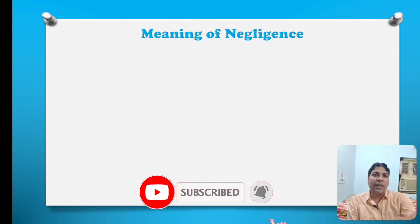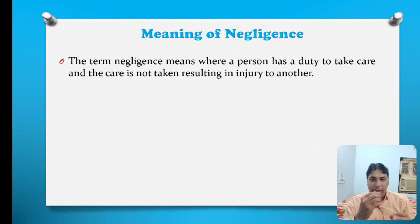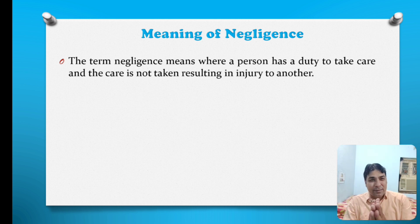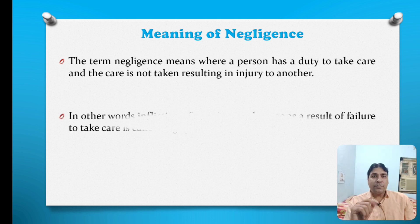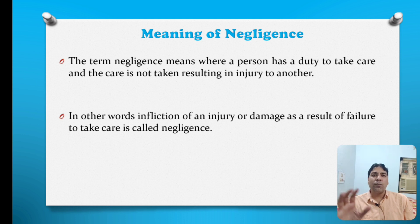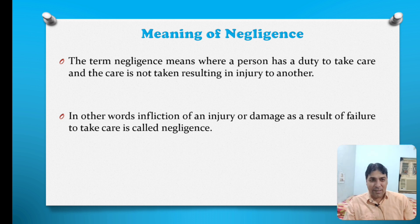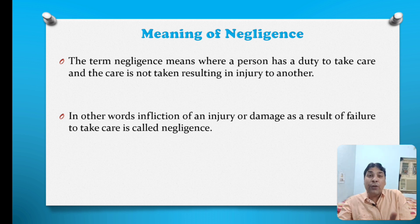Now we will turn towards the meaning of negligence. The term negligence means where a person has a duty to take care and the care is not taken, resulting in injury to another person. So whenever the person is having a duty to take care, but due to the carelessness or failure of that duty, if someone else has sustained a certain kind of injury, it means the tort of negligence has occurred. In other words, infliction of an injury or damage as a result of failure to take care is called negligence. I am having a duty to take care; if I fail to take care and it results in a certain kind of injury to you, I may be held liable for the tort of negligence.